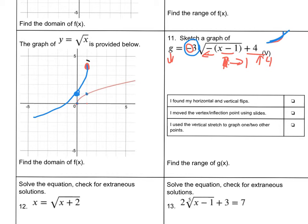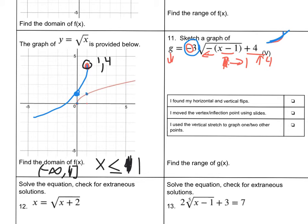For the domain, we don't have a starting point — this time we have an ending point, and this is at 1, 4. So X is going to be less than or equal to 4. If you prefer interval notation, that would be negative infinity to 4. Similarly, the range — the ending point is at X equals 1, Y equals 4, and the range is going down from 4. So Y is less than or equal to 4, and in interval notation the range would be negative infinity to 4.